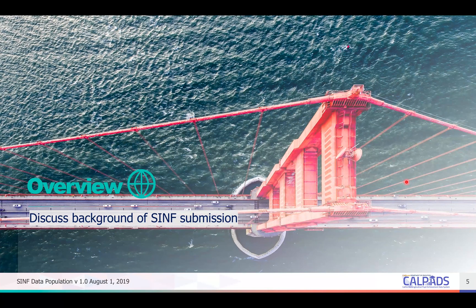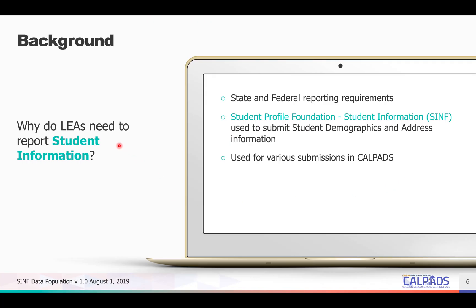First, we will start with some general information related to student demographics and introduce key concepts related to the data collected. Why do LEAs need to report student information? LEAs are expected to submit student information records to CALPASS in compliance with state and federal reporting requirements. Student information is used to submit student demographics and address information, which is the foundation of the student profile in CALPASS. It is important that student information data is reported and updated throughout the academic year, as it is used for various submissions throughout the year.